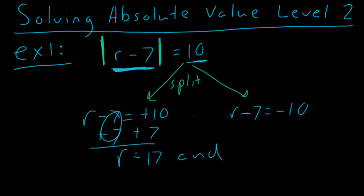And over here, it's actually pretty cool because you always wind up doing the exact same operations. What's the opposite of minus 7? Well, it's plus 7 and plus 7. And we get r equals negative 10 plus 7, negative 3. Oh, very cool. Nice and easy. Two solutions.